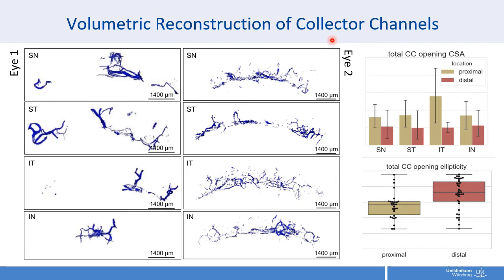There are considerable inter-individual differences. Individual I1 shows fairly large, curving, bending, probably collapsible collector channels, while another individual has many tiny ones everywhere, and I2 has really tiny ones. Summarizing these findings, the proximal vessels are larger compared to the distal ones. The proximal collector channels are also less ellipsoid — more round-shaped — while the distal ones are more oval. We interpret this as perhaps being more collapsible, and if that is the case, they could provide the outflow resistance we are looking for.